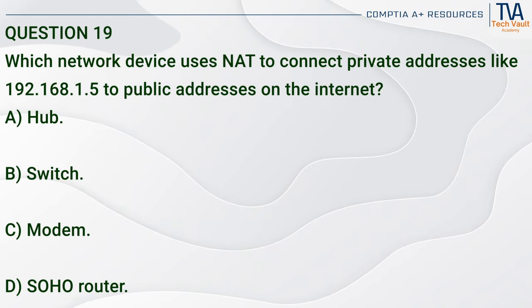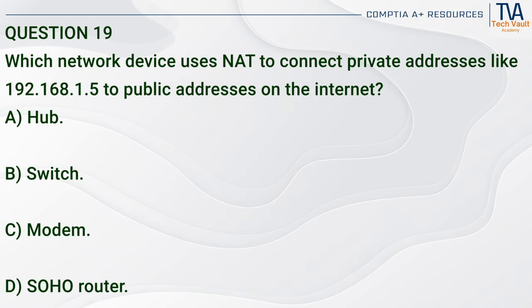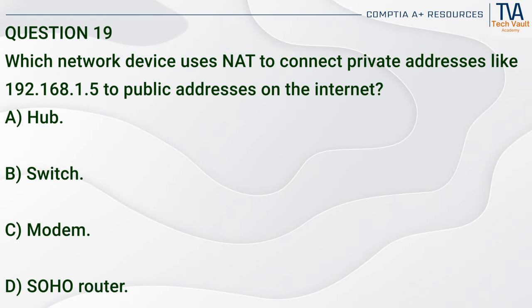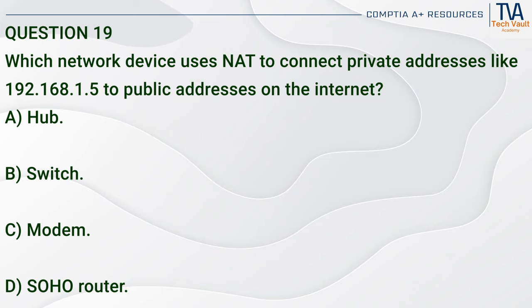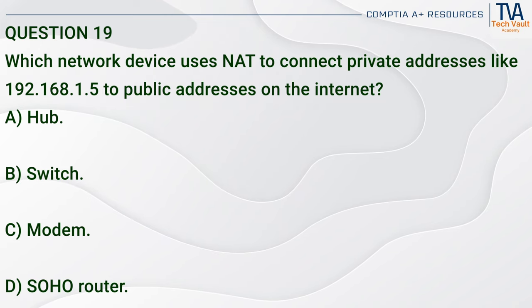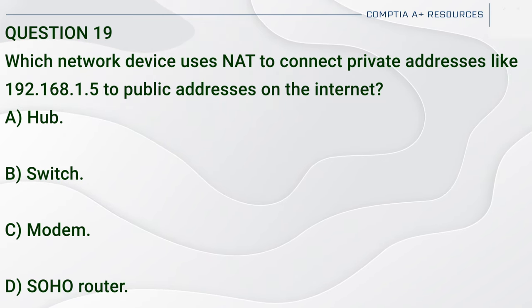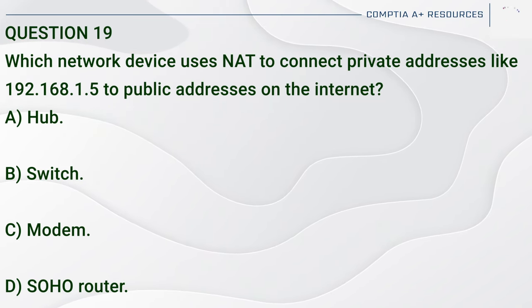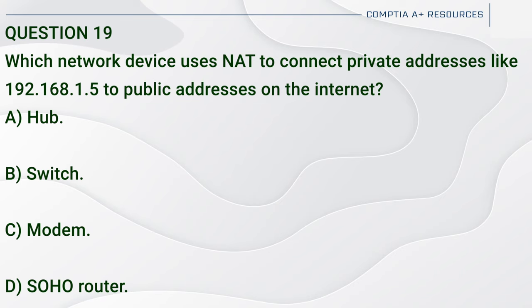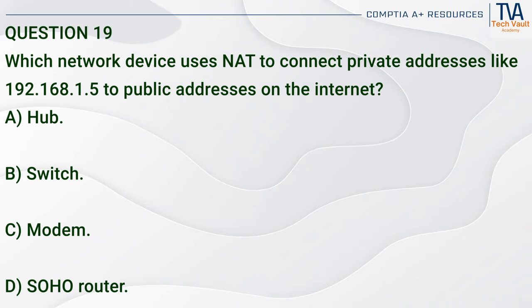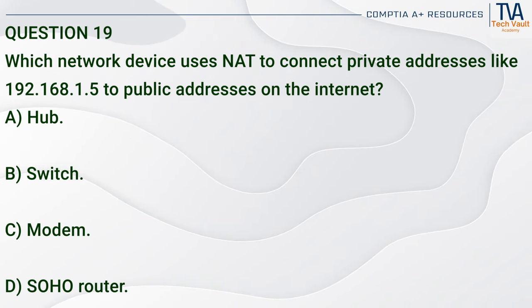Question 19. Which network device uses NAT to connect private addresses like 192.168.1.5 to public addresses on the internet? A. Hub. B. Switch. C. Modem. D. SOHO router.